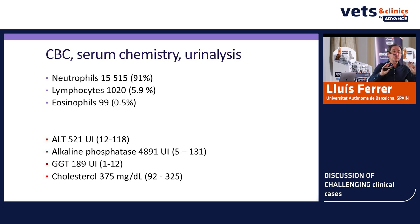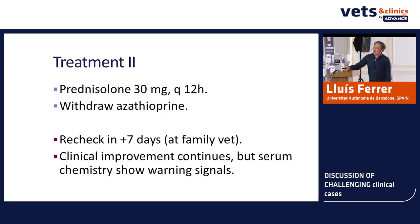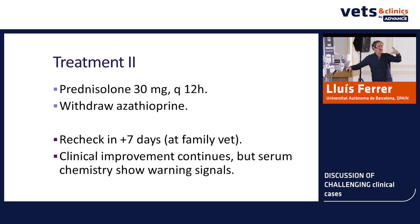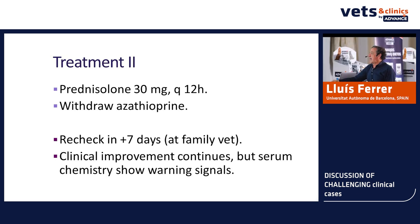The problem when using two drugs is that you don't know which one is causing the damage, because azathioprine is hepatotoxic and prednisone is hepatotoxic too. ALT was almost five times above the upper limit. We decided to discontinue azathioprine, because the improvement was probably caused by prednisolone — azathioprine works very slowly. We continued with prednisolone and planned to repeat blood work in seven days to monitor liver values.